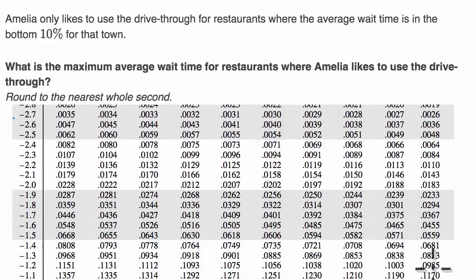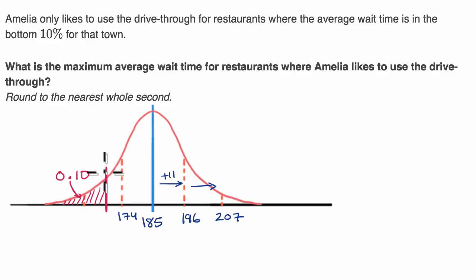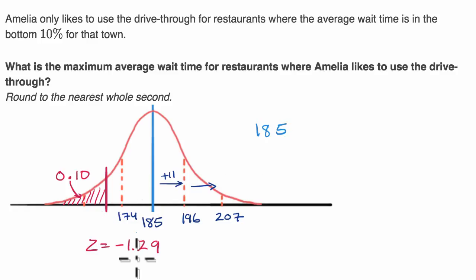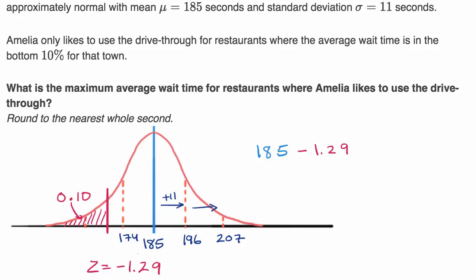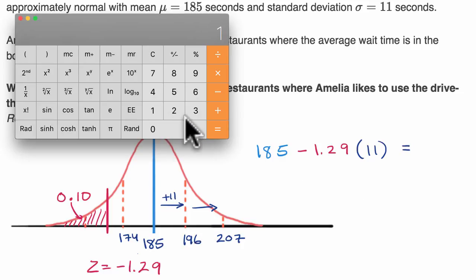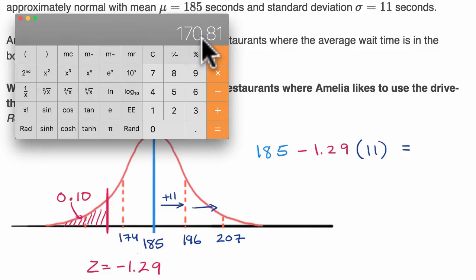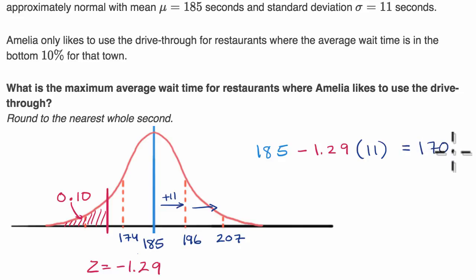So our Z-score is negative 1.29. To figure out the actual wait time value, we start with the mean of 185 seconds and go 1.29 standard deviations below the mean: 185 minus 1.29 times 11. That gives us 1.29 times 11 equals 14.19, and 185 minus 14.19 equals 170.81 seconds.